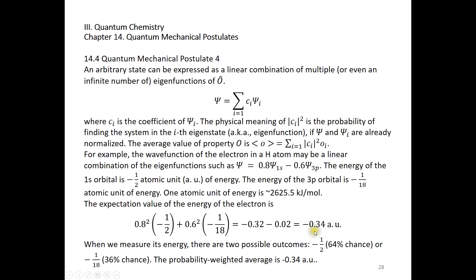This is the expectation value of the energy of the electron. However, if you really want to measure the energy of the electron, you are not going to get negative 0.34. You can only get the eigenvalues — that means you can either get negative one-half or negative 1 over 18. It's never going to be negative 0.34. The electron will have to collapse into a 1s electron or a 3p electron when you try to measure its energy. It's probabilistic — there are two possible outcomes: negative one-half with 64% chance or negative 1 over 18 with 36% chance.